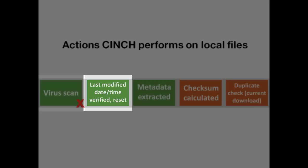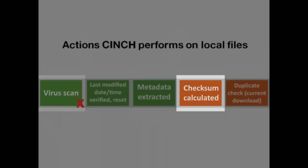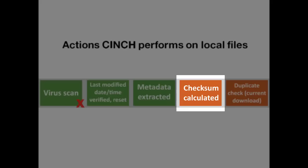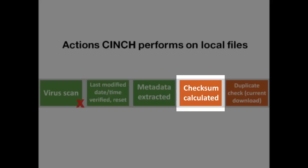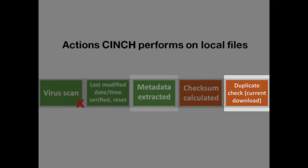This does not result in any change to the file's checksum value. Next, Cinch scans those files for viruses — any found to have viruses are deleted and a note is made in the event list. A checksum is calculated for the local file and compared with the checksum calculated before the file was downloaded; if the checksum has changed, Cinch moves the file to the problem files folder. Cinch also checks for duplicate checksums in your current batch, moving any duplicates to the problem files folder. Finally, metadata is extracted from the file.